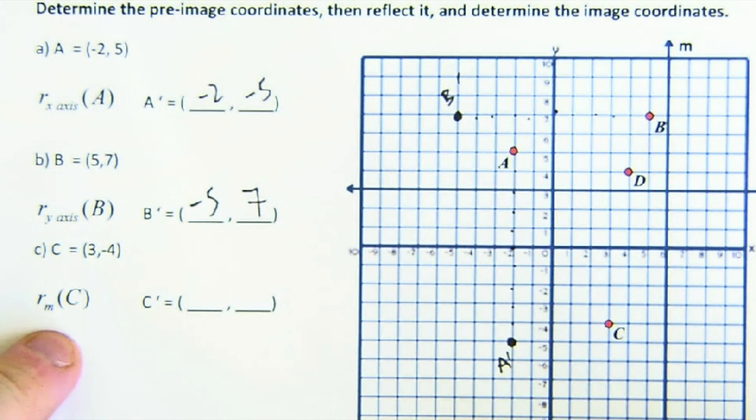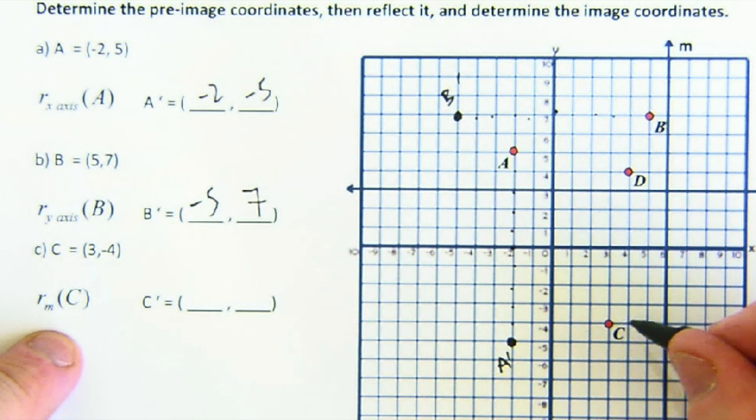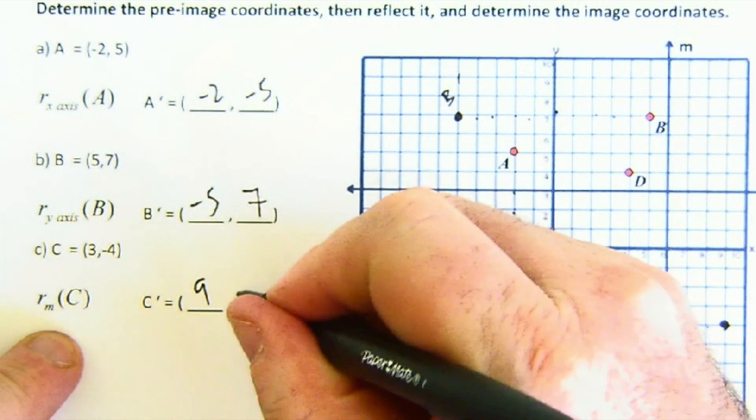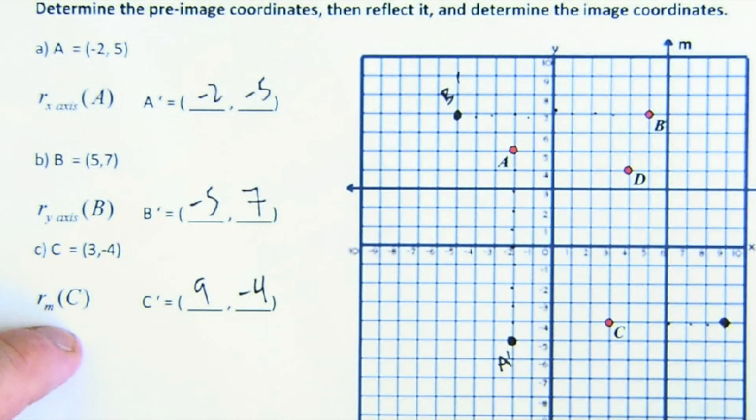This says reflect over line M, the point C. Here's C: one, two, three; one, two, three. That's at nine and negative four. So just practicing looking at reflecting on a coordinate system.